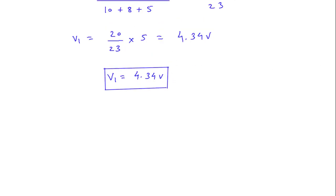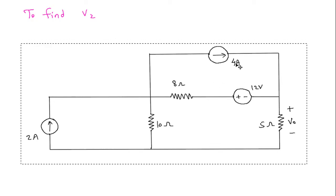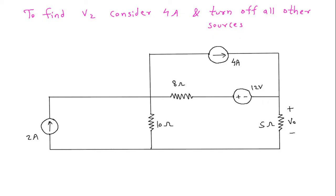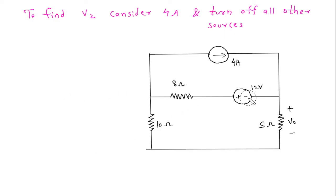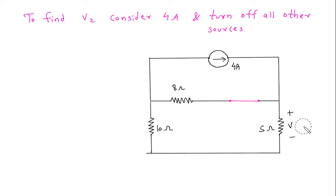Next, we have to find V2. To find V2, we will turn off the 2A and 12V sources and consider the 4A source. The 2A current source will be open circuited and the 12V voltage source will be short circuited. This will be V2 — the voltage due to the 4A current source.